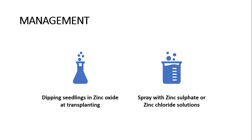To manage this disease, treat seedlings with zinc oxide at transplanting, and spray with zinc sulfate or zinc chloride solutions.